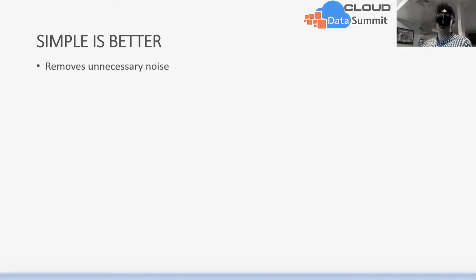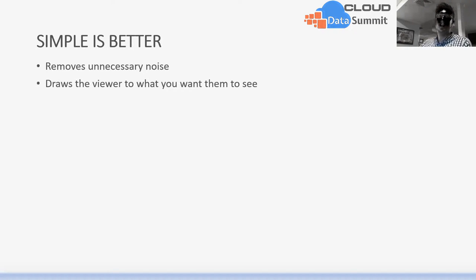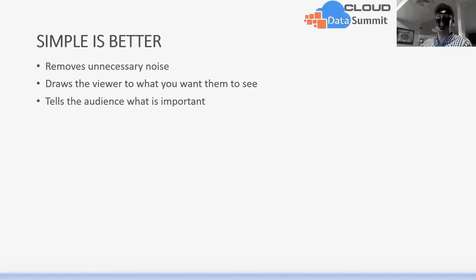Let's jump into 'simple is better.' The first thing we want to do is remove unnecessary noise, which allows your audience to focus on what truly is important. Real estate is precious — you don't want to force grid lines, tick marks, or other visualization features that distract the user. We also want to draw the viewer to what we want them to see. Attention spans are very limited in today's business world, so we want to draw our audience to what we want them to look at, allowing them to quickly identify the key message and then start listening again rather than scanning the graph.